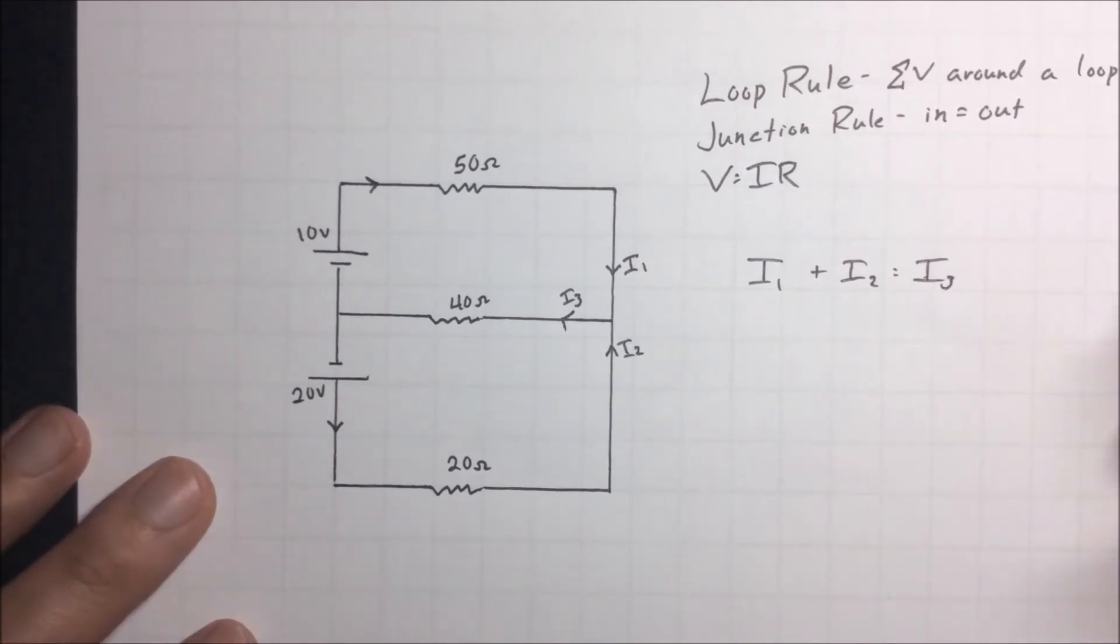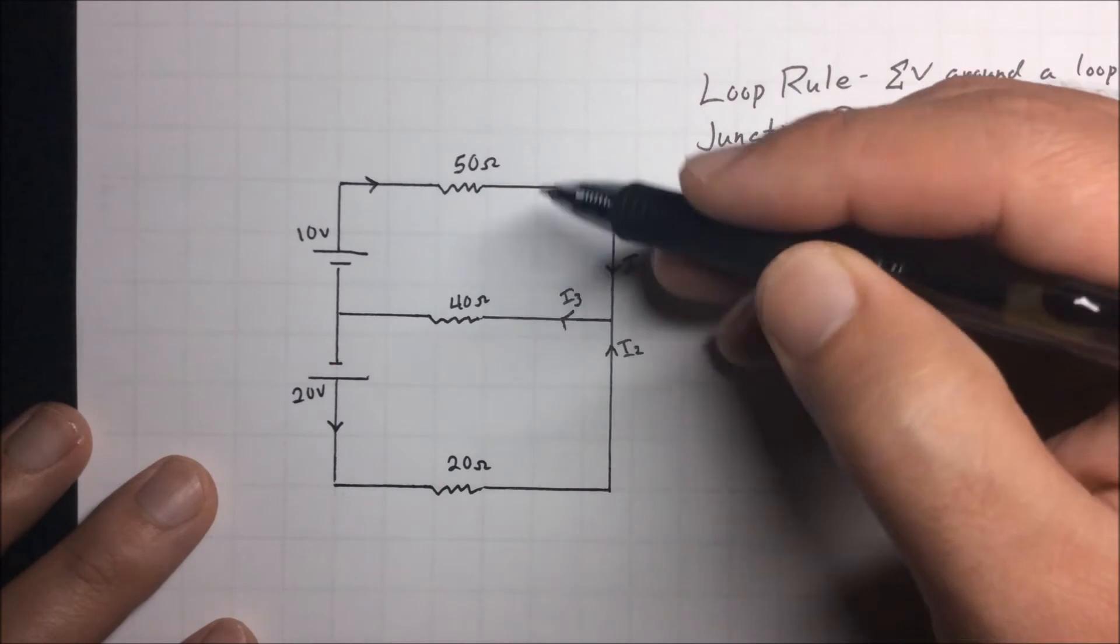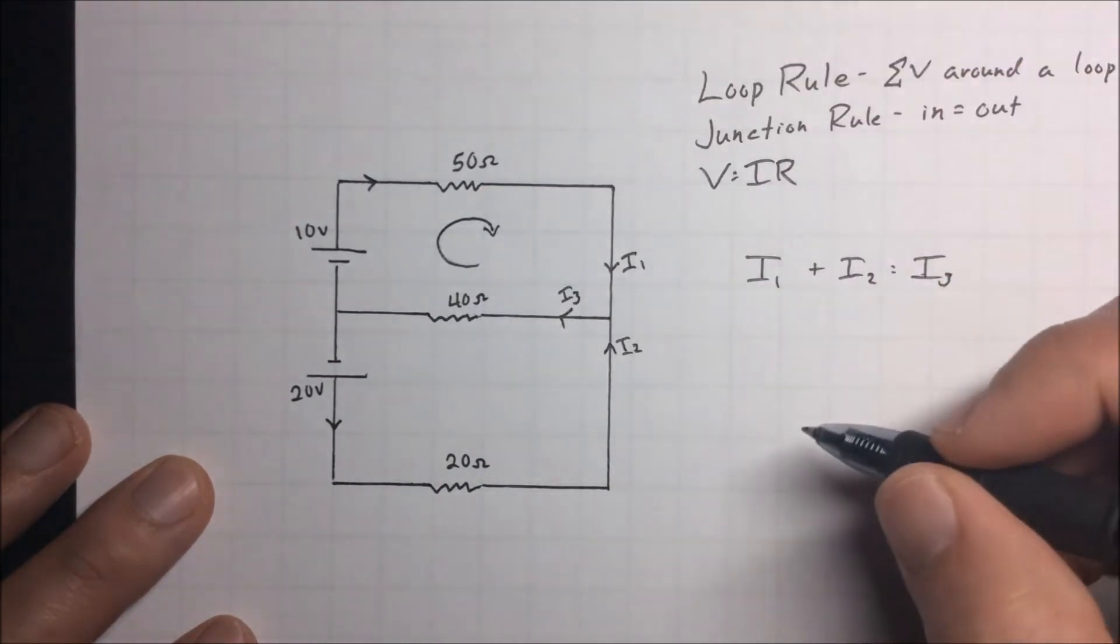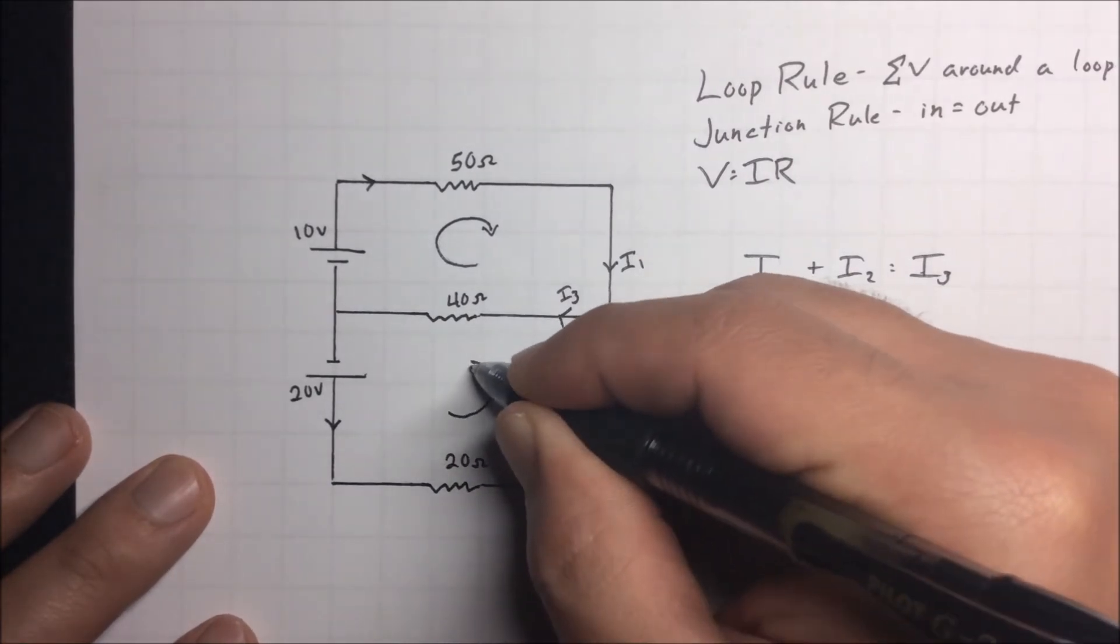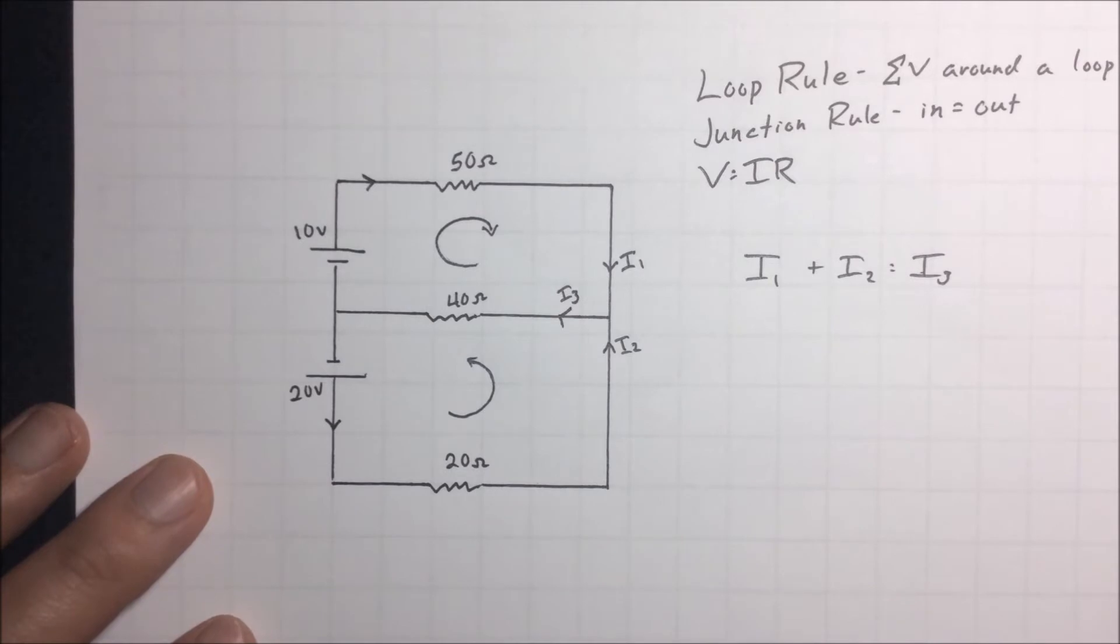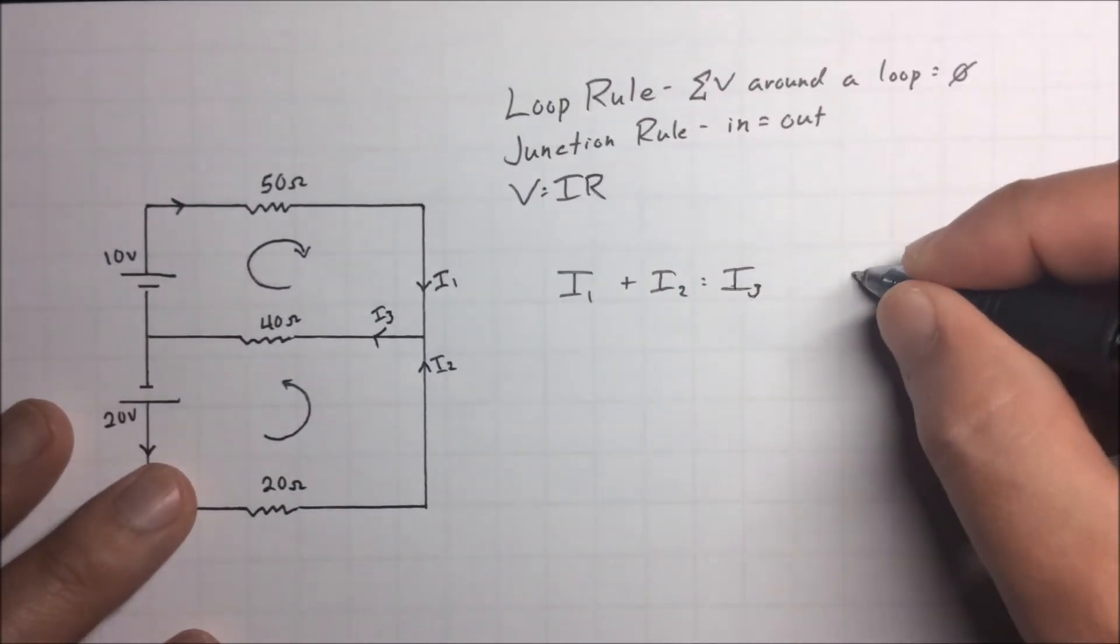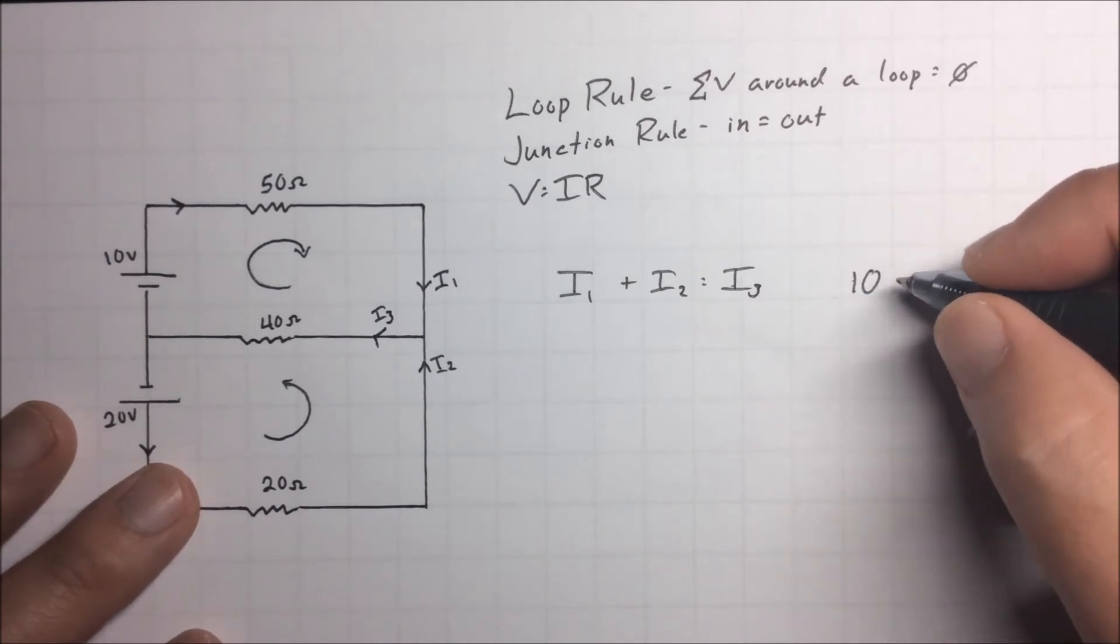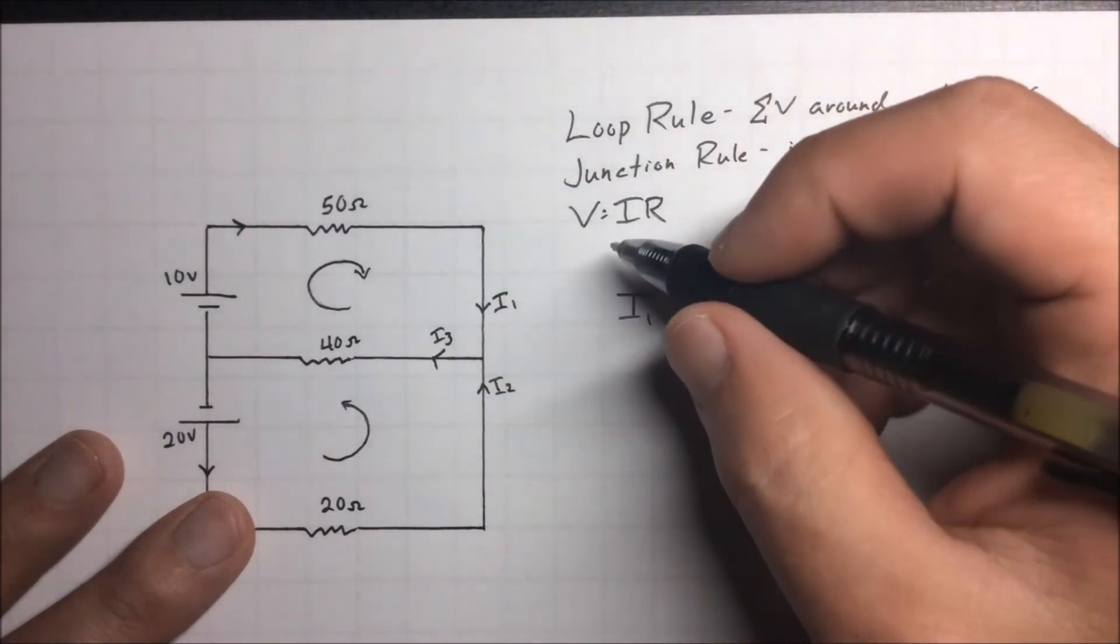So focusing on the top loop I'm going to choose the direction, which is going to be the direction of the current overall. So my current is going to be in a clockwise fashion. So I'm going to say the top loop we're going to go around clockwise, whereas on the bottom loop we're going to do a counterclockwise direction for that.